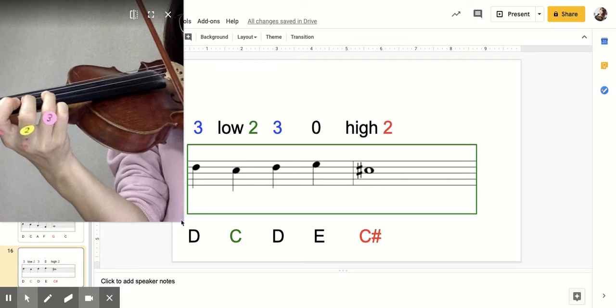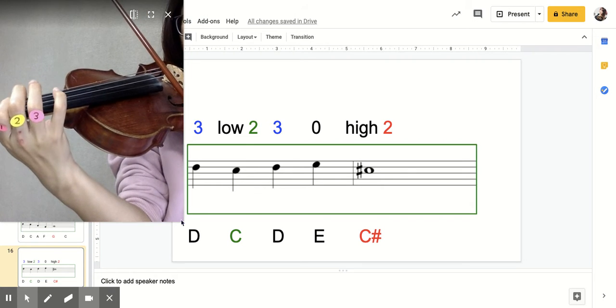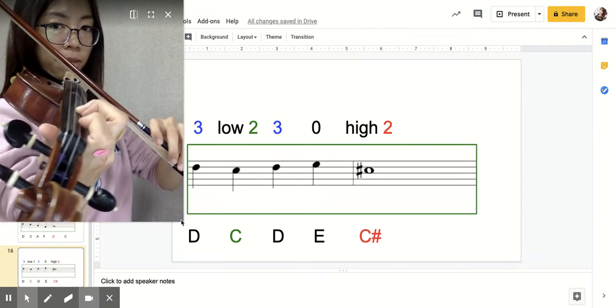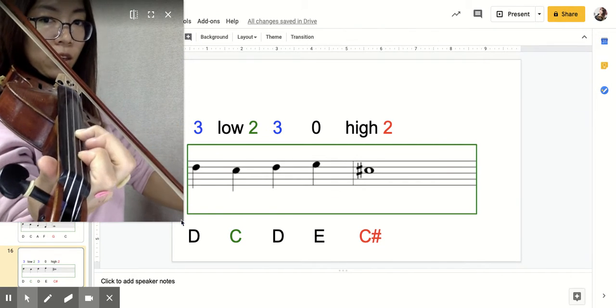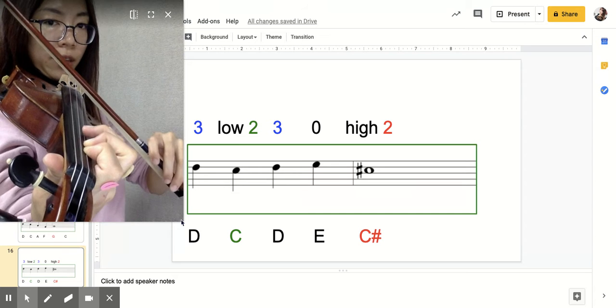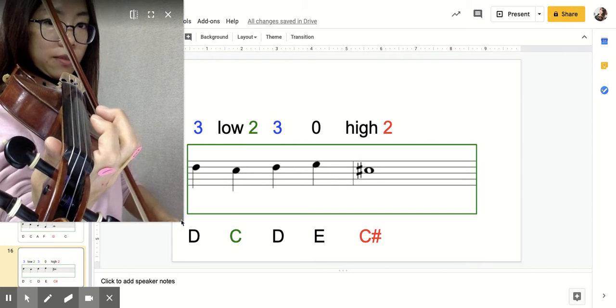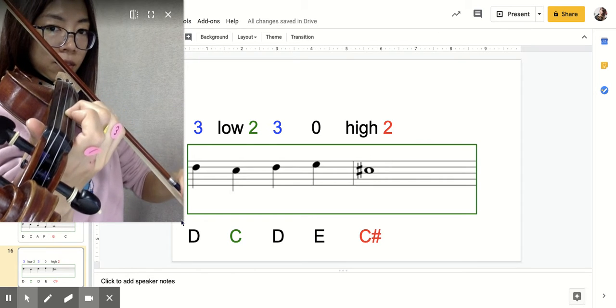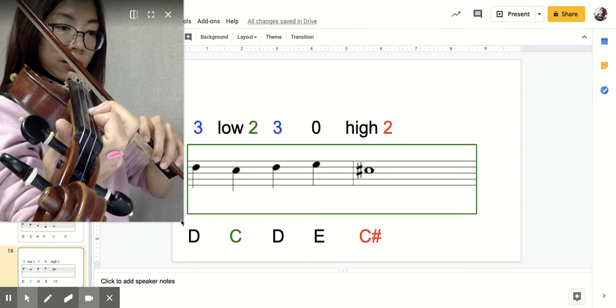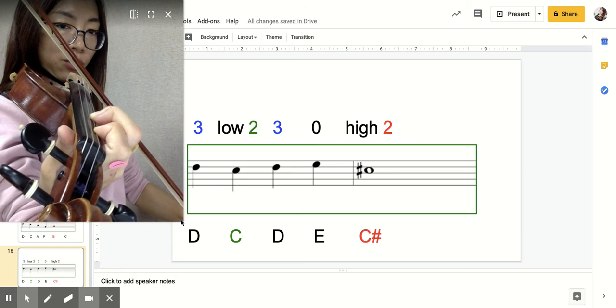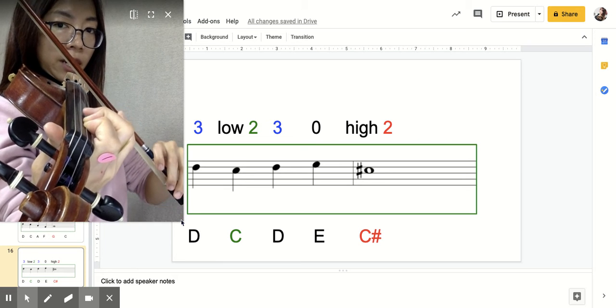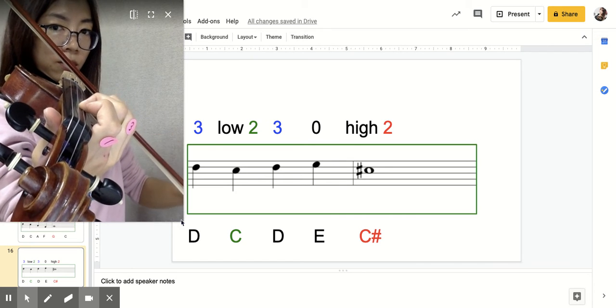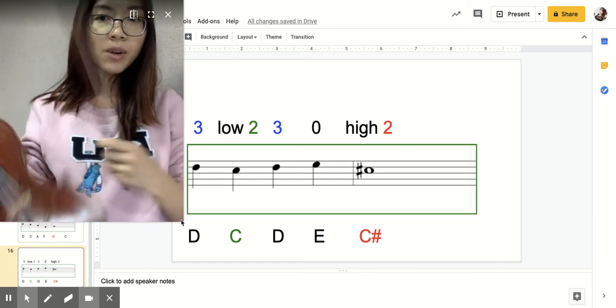It's going to sound like you're talking. Okay, let's play: B, low two, three, B, second finger. Okay, last time: D, low two, three, B, second finger, high two. Okay, have fun practicing!